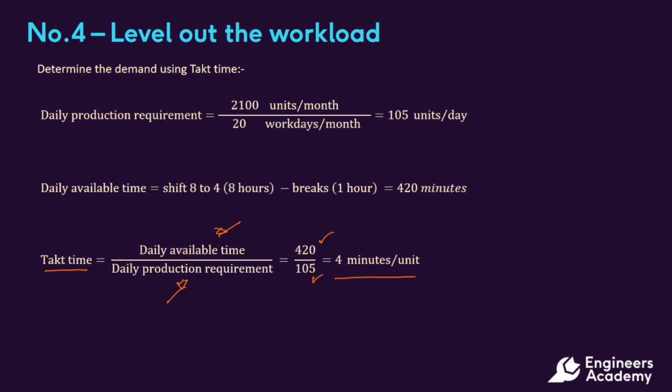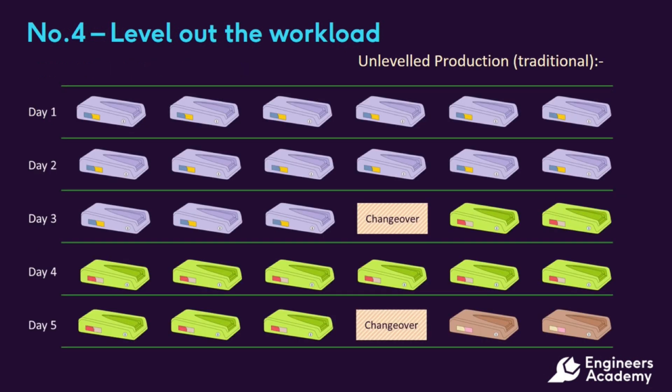This means we have a takt time of 4 minutes per unit, so we would expect a unit to come off the end of our production line every 4 minutes. The diagram here represents an unleveled production schedule from an e-bicycle battery plant.